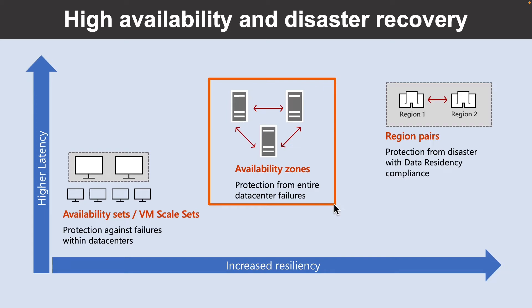The next high availability option is availability zones, which are an alternative to availability sets and expand the level of control you have over maintaining the availability of your applications and data on your virtual machines. An availability zone is a physically separate zone within an Azure region, and there are three availability zones per supported Azure region. Each availability zone has a distinct power source, network, and cooling. By architecting your solution to use replicated virtual machines across zones, you can protect your apps and data from the loss of a data center. If one zone is compromised, replicated apps and data are instantly available in another zone.